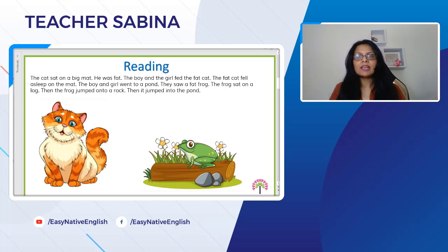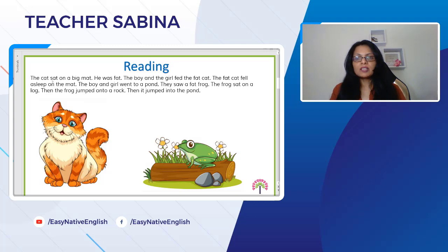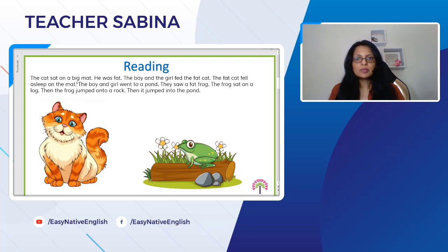We have a lot of what we call CVC words in this text. Basically a CVC word is a consonant-vowel-consonant word. For example, 'cat' is a consonant, then you've got the 'a' which is a vowel, and then the 't' which is another consonant. 'Sat' is also a CVC word. 'Big' — B is the consonant, I is the vowel, and G is a consonant. Any three-letter word that has a vowel in the middle is a CVC word.